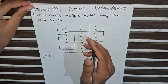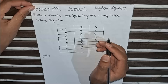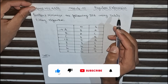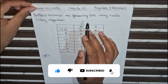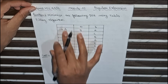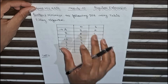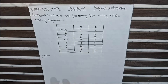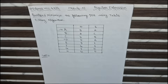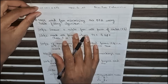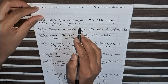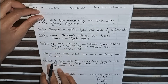Hello everyone, welcome back to Express Video for All. Today we are going to solve a very important question from module 2: regular expression. In this question we have to minimize a DFA using the table-filling algorithm. Here is the table given in this question, and we have to minimize it using the table-filling algorithm.